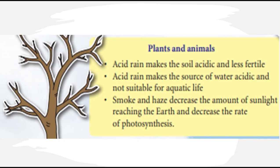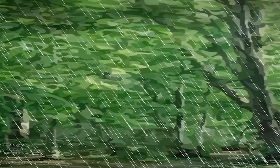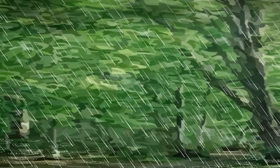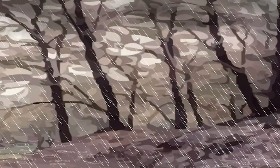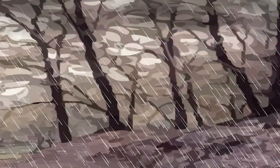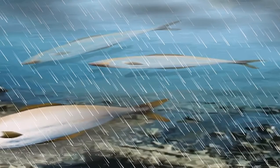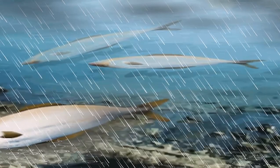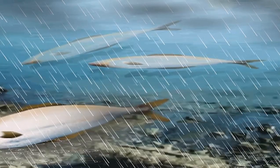Next, let's look at the effect of air pollution towards plants and animals. Acid rain makes the soil acidic and less fertile. Acid rain also makes the source of water acidic and not suitable for aquatic life.